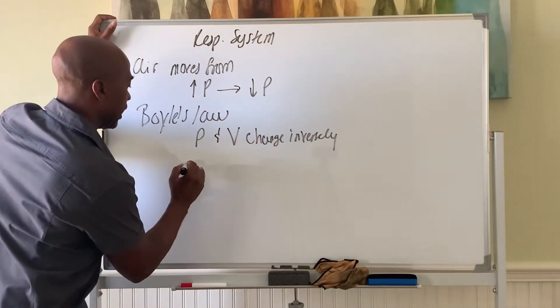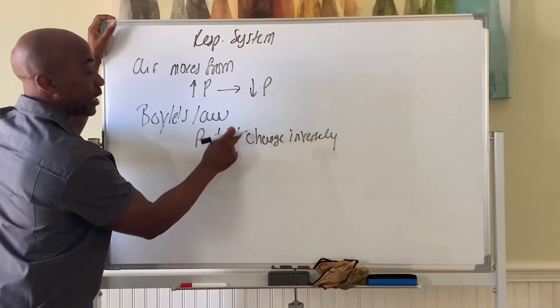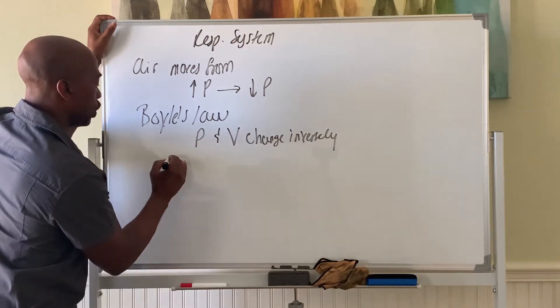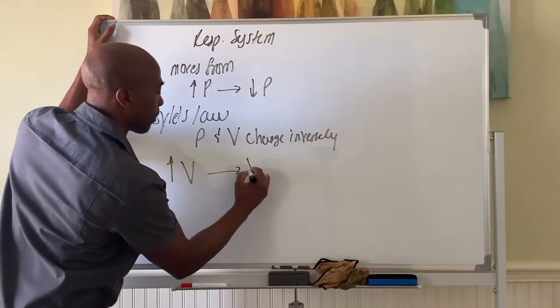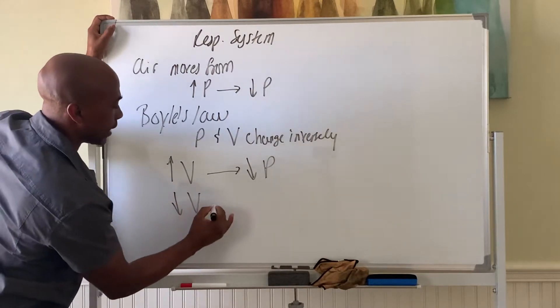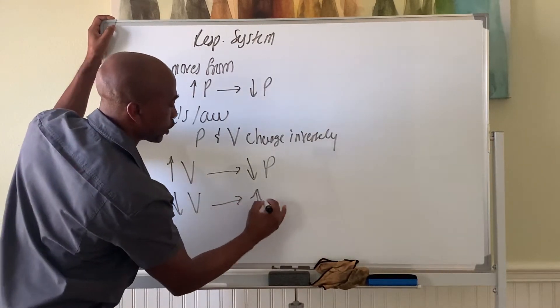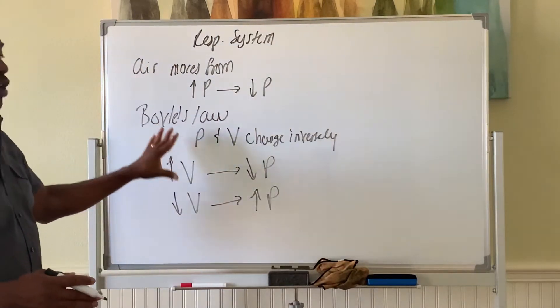We use the volume part as the independent variable here in this case. So you increase volume, that will cause pressure to drop, and vice versa. You decrease volume, that leads to an increase in pressure. That's the Boyle's Law relationship between pressure and volume.